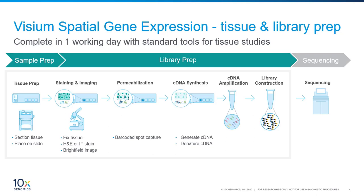Next, permeabilize the tissue, enabling barcoded spot capture. This is followed by a cDNA synthesis and denaturation step, and subsequently cDNA amplification and library construction. The samples are now ready to be sequenced by an Illumina NGS instrument.